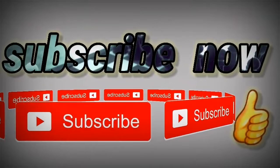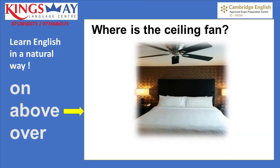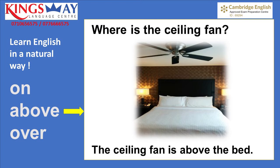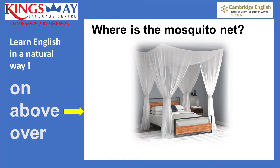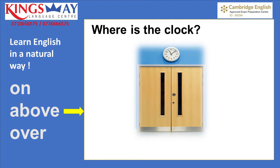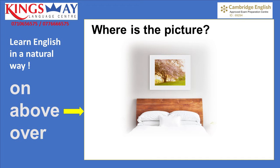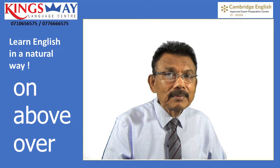I hope you now understand how to use 'above.' Now you answer the following questions. Where is the ceiling fan? The fan is above the bed. Where is the mosquito net? The mosquito net is above the bed. Where is the clock? The clock is above the door.